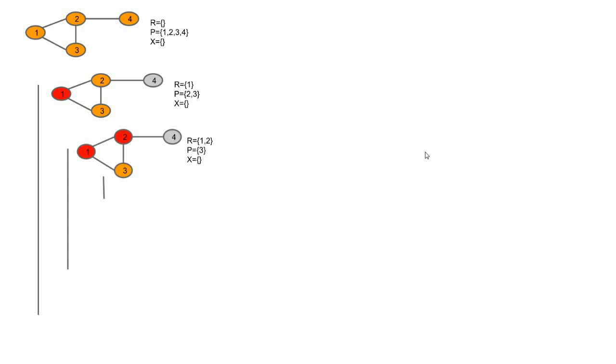Let's explain this with an example. Starting with R = empty, P = {1,2,3,4} (all vertices), X = empty. In the next recursive call: R = {1}, P = {2,3} (neighbors of 1 intersected with original P), X = empty. Going deeper: R = {1,2}, P = {3} (neighbors of 1 and 2), X = empty. Then R = {1,2,3}, P = empty, X = empty — so P ∪ X is empty, and we report {1,2,3} as a maximal clique.